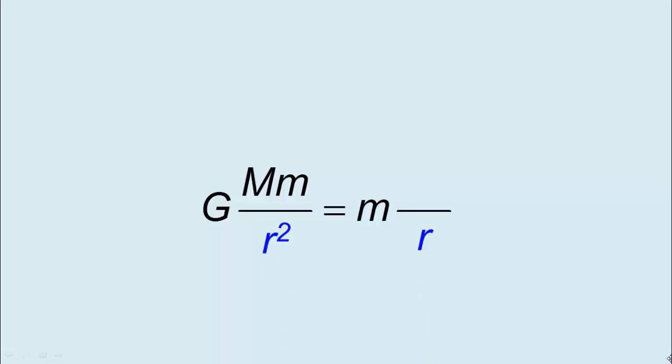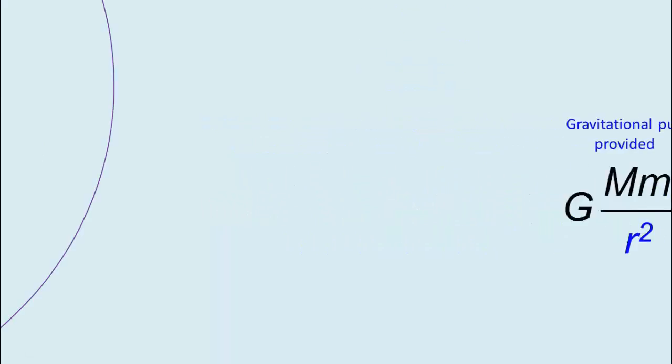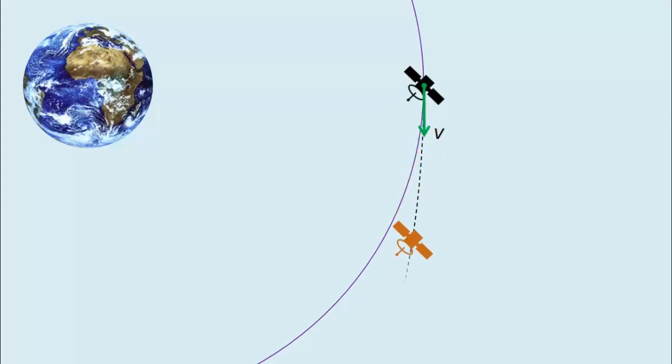At each altitude, there is only one orbital speed such that gravitational force exactly equals the required centripetal force. The satellite will rise above the circular orbit if it goes too fast. If it goes too slow, it will drop inside the circular orbit.